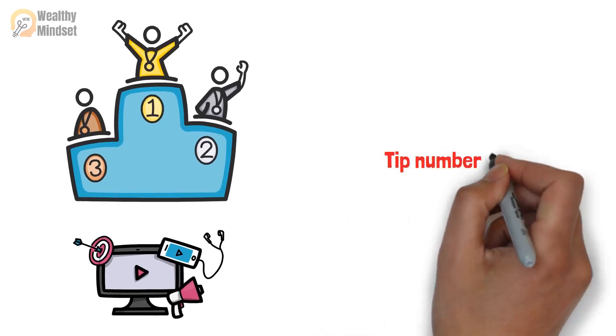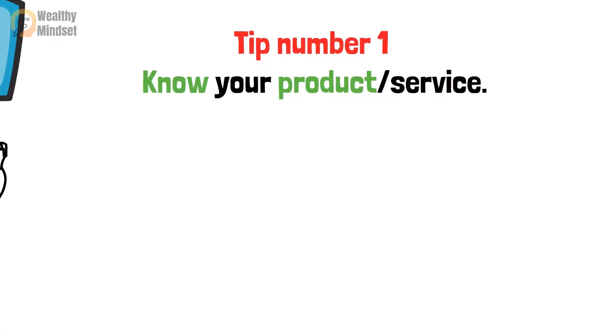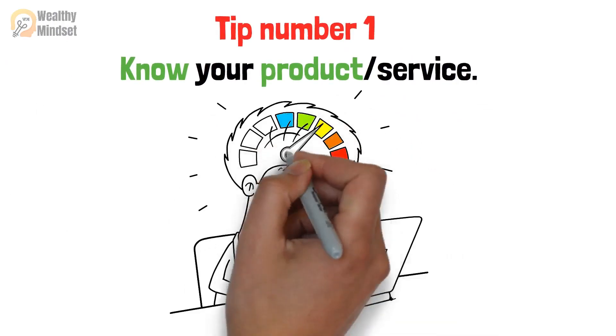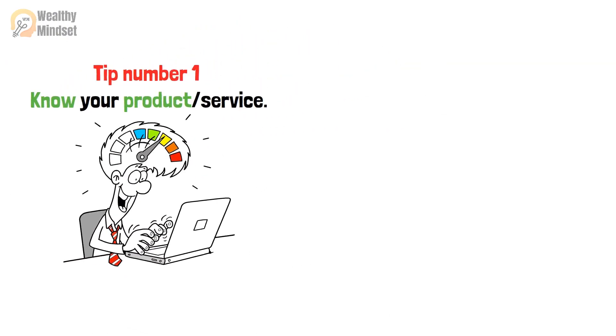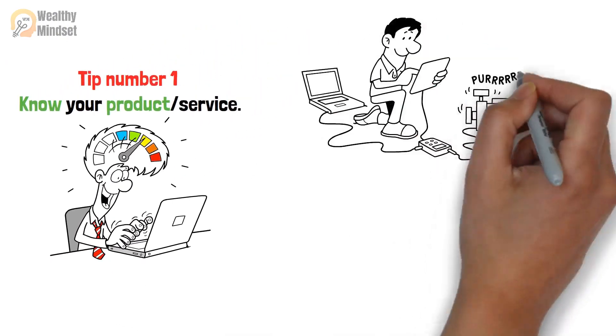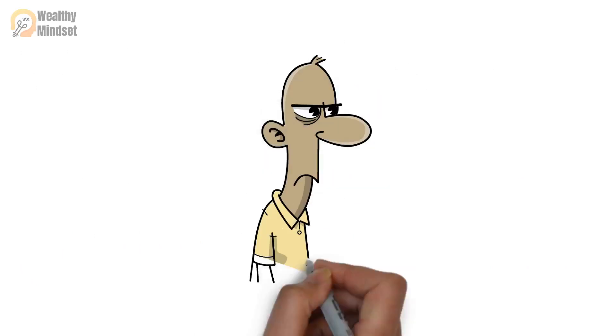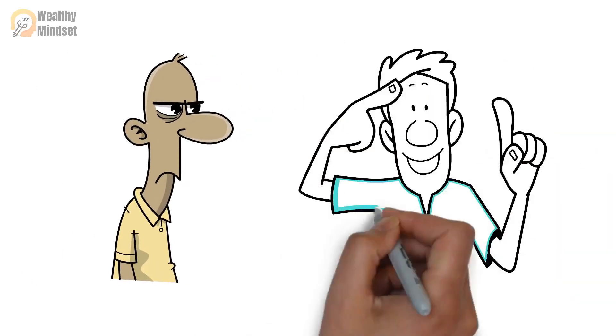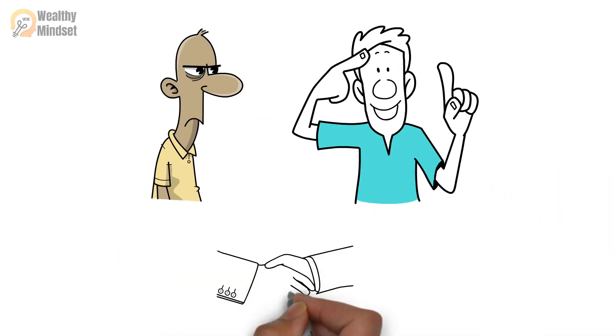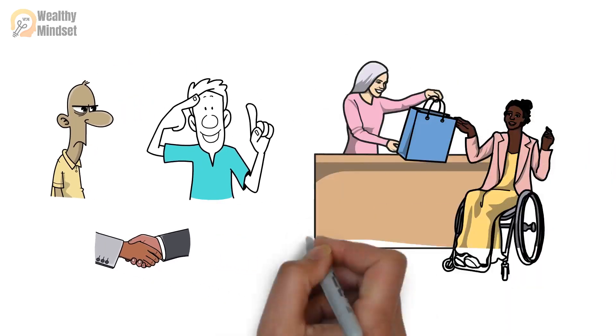Tip number one, know your product or service. The first step to effectively sell everything is to know your product or service inside and out. This means understanding its features, benefits, and unique selling proposition. You should also be able to anticipate common objections and have a solid response ready. This knowledge will help you build trust and credibility with your potential customers.